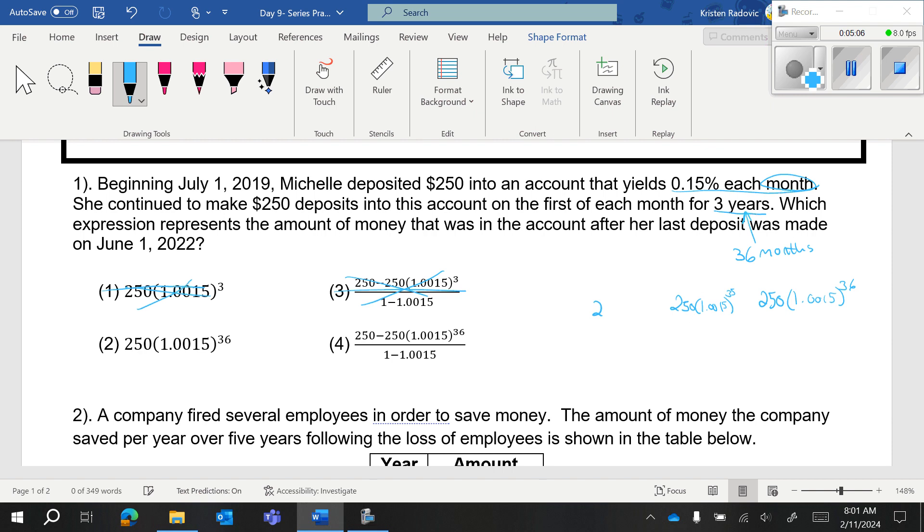Then March, she puts another $250 into an account. But because that is again one month later, that $250 only has 34 months to accrue interest. And you want to see how much money that they made in total.